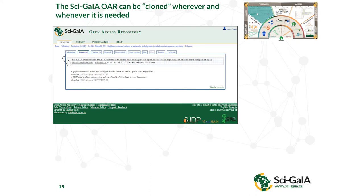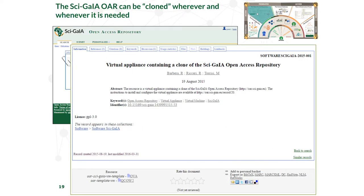There is another example shown today about a research package in agent-based computing simulations. The open access repository itself is a research package. If you go to our open access repository, we have one deliverable explaining our work on open access and open data, instructions to configure a clone of the SciGaia open access repository, and a virtual appliance containing the clone. You can download it in several formats, install it on your virtualized environment, configure it using the provided instructions, and create a clone. And this is actually happening.